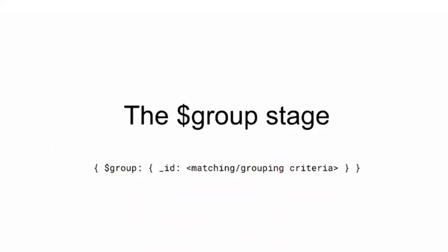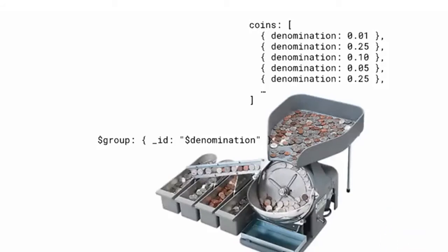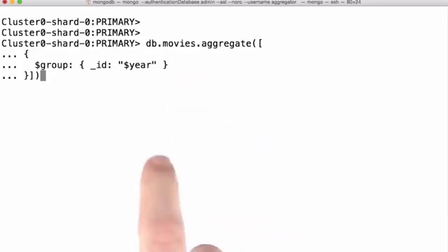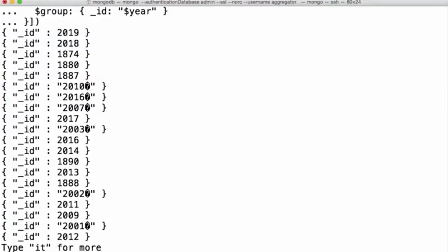The next stage we'll learn about is the $group stage. Key to our comprehension of group is to understand the one required argument: the underscore ID field of this stage. The expression or expressions we specify to underscore ID becomes the criteria the group stage uses to categorize and bundle documents together. In this picture, we're grouping coins based on their denomination, so the expression specified to underscore ID would be the denomination field path. Let's group documents in our movies collection based on the value they have in their year field.